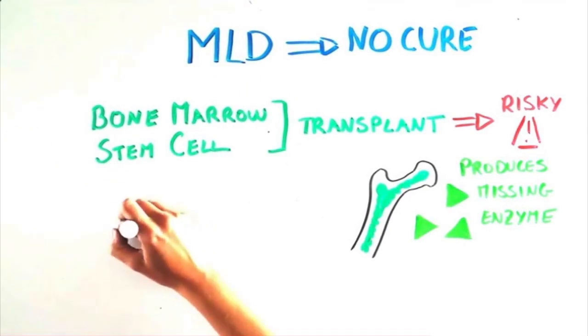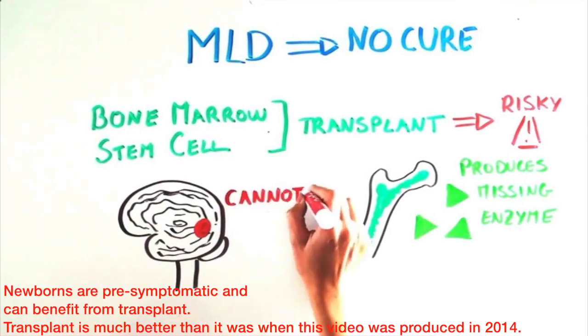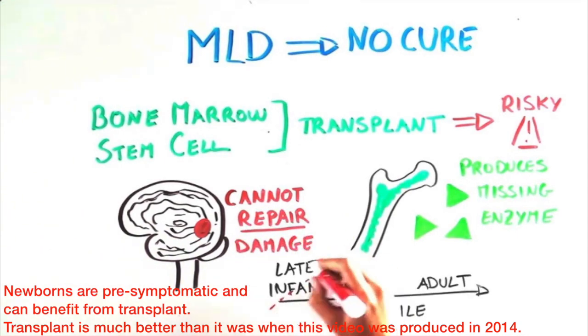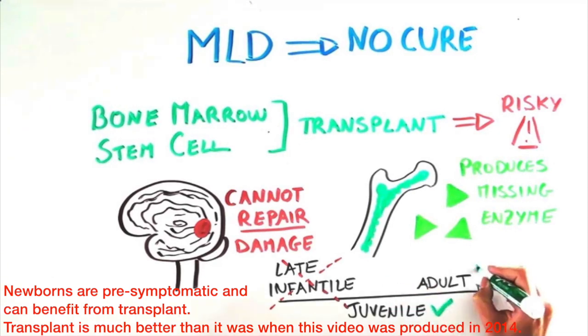Because transplant cannot repair the damage already done to the brain and peripheral nerves, it is not effective for the late infantile form of MLD once symptoms have appeared, because of the rapid progression of this form of the disease. However, transplant has slightly better but far from perfect outcomes with juvenile and adults before severe brain damage has occurred.